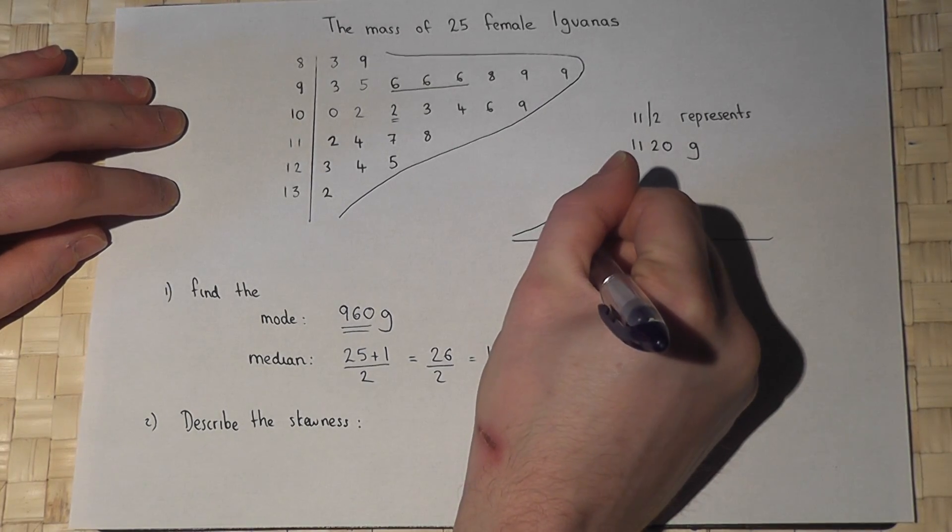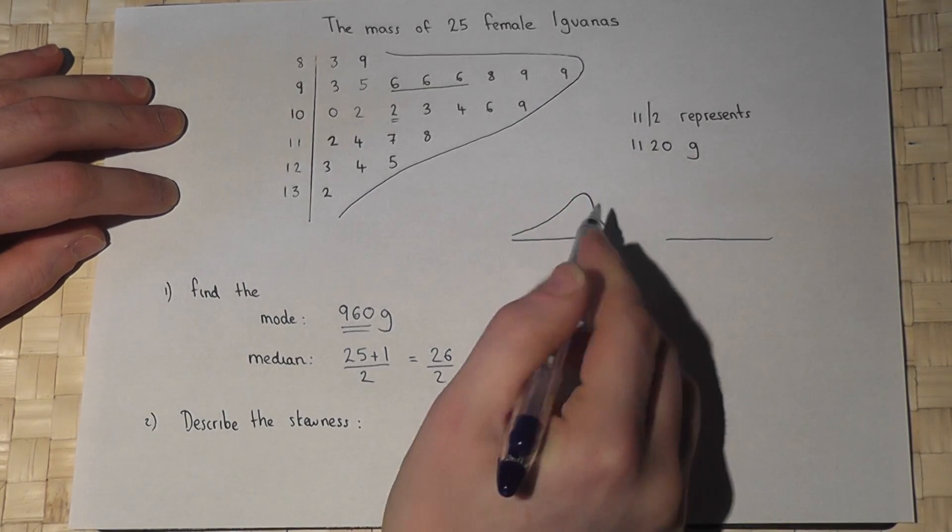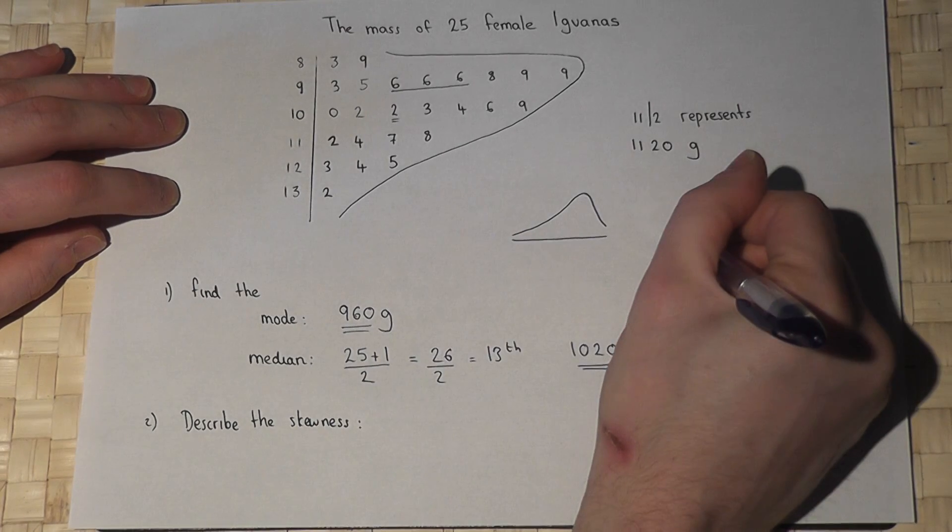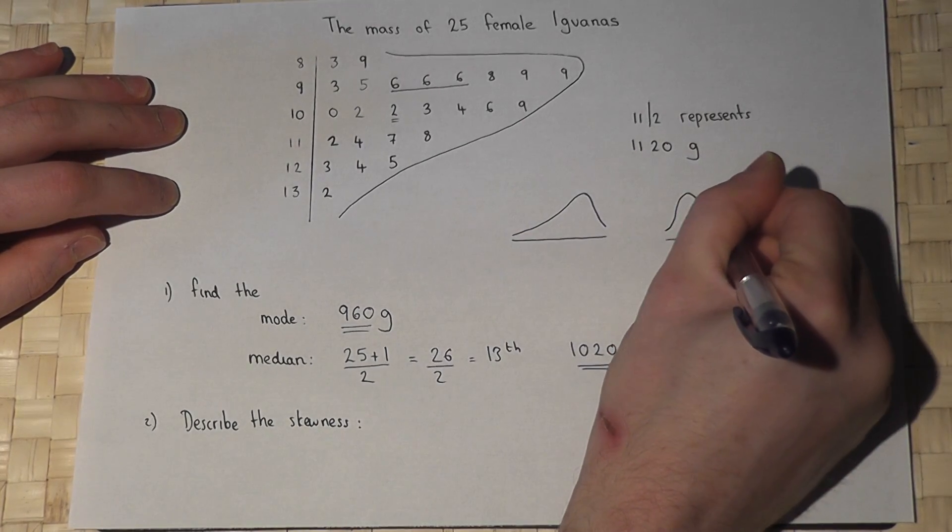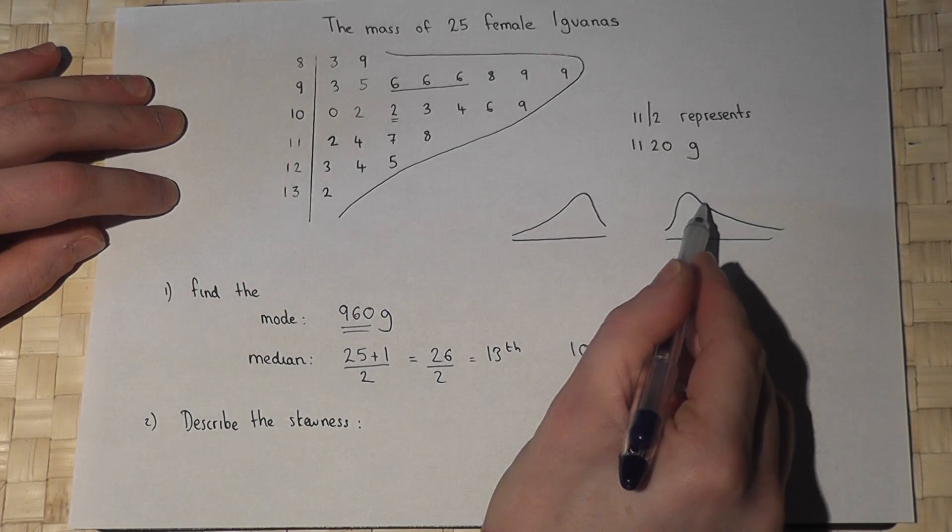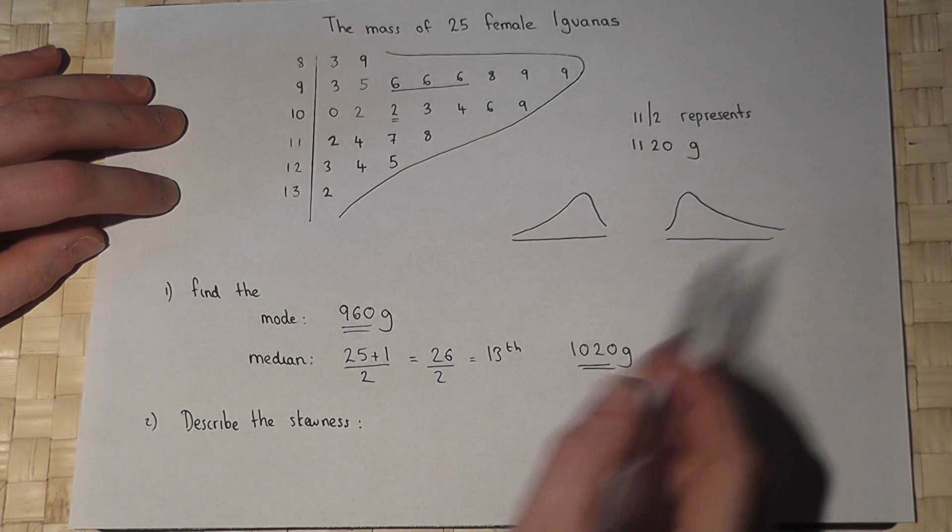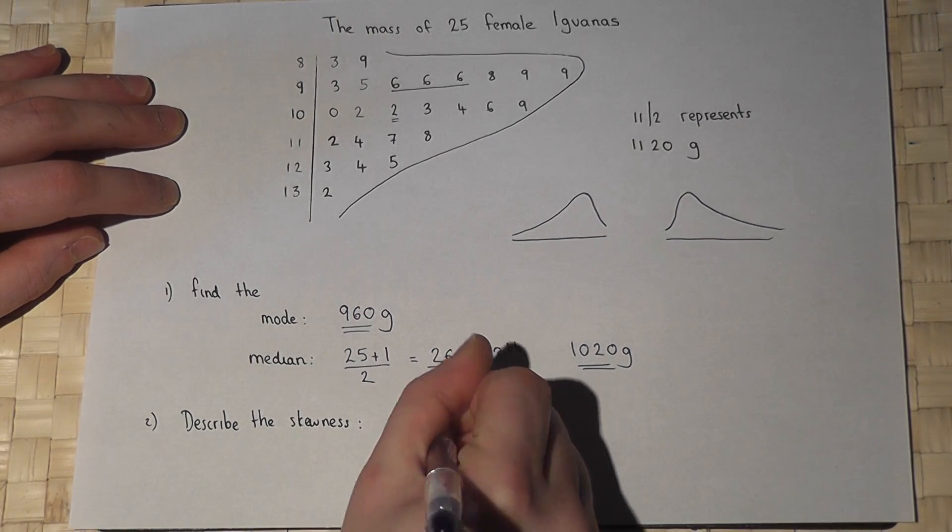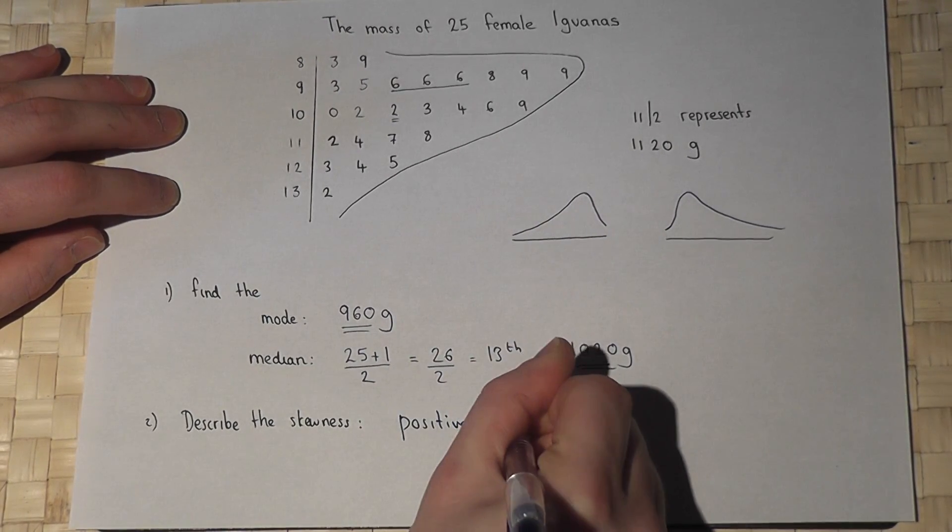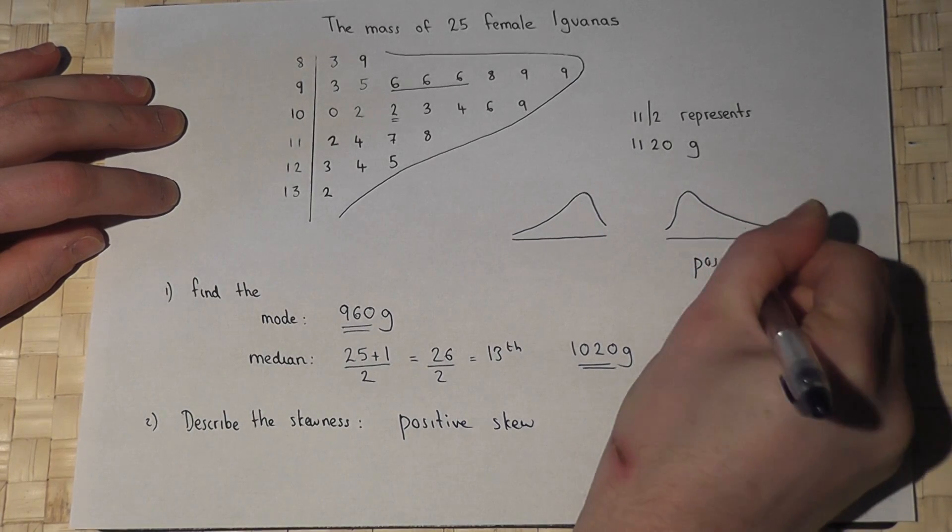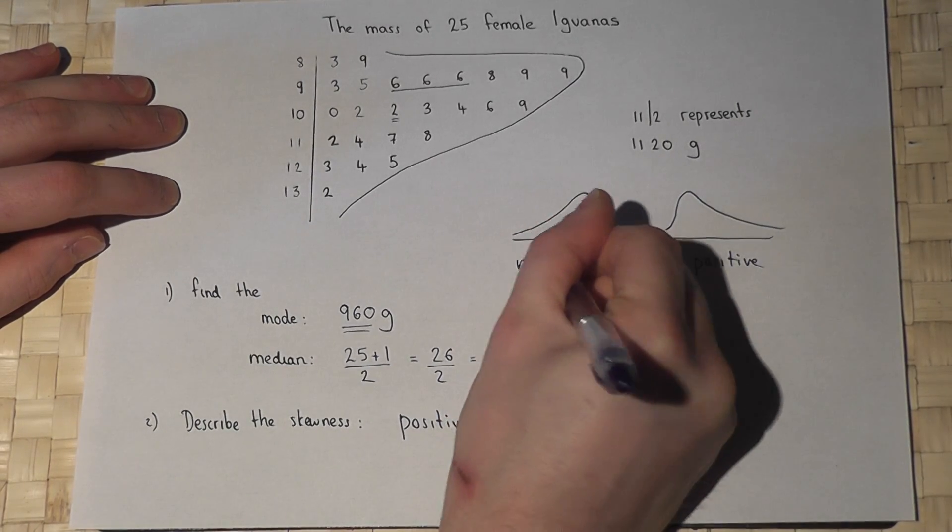There's either the peak to the right with the tail off to the left, or as on this diagram, the peak to the left with the gradual tail off to the right. This graph here is called positive skew. This one's positive and this one's negative.